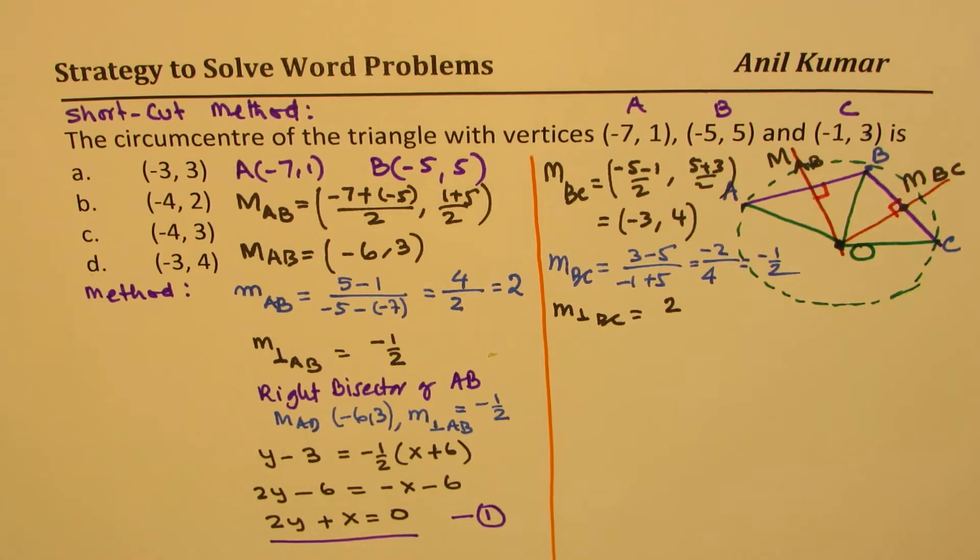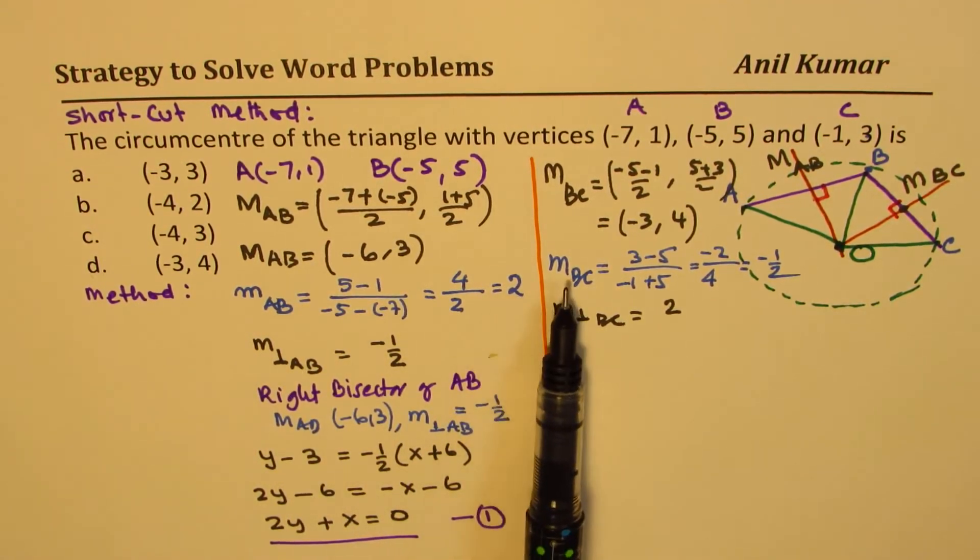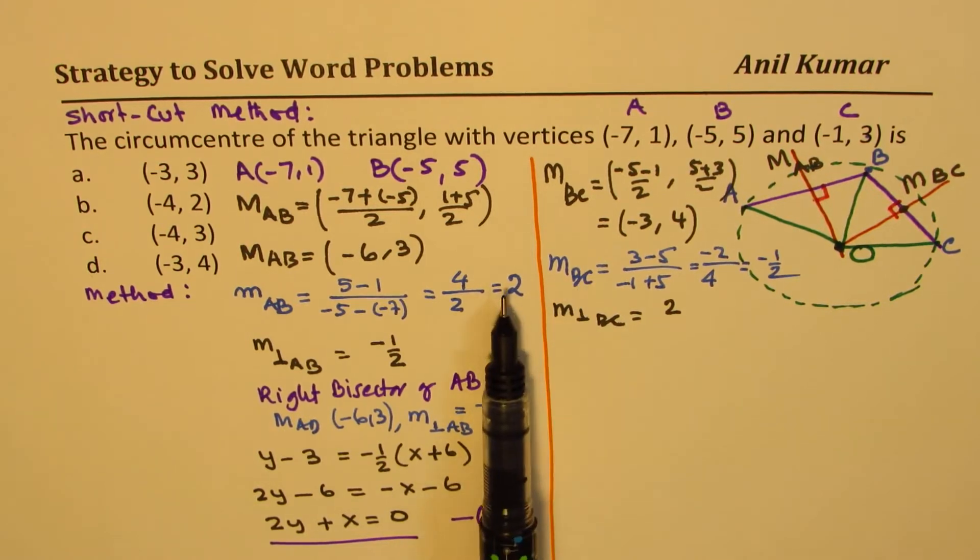So it's interesting to note that the slope of AB was 2 and slope of BC is negative reciprocal.